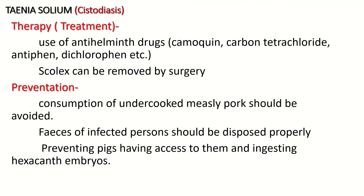There are some treatments available for Taeniasis and Cysticercosis. These include the use of anti-helmintic drugs such as chamoquin, carbon tetrachloride, antiphane, and dichlorofane. These anti-helmintic drugs are used to remove Taeniasis or Cysticercosis. Additionally, omacine is also an effective drug for this type of disease.